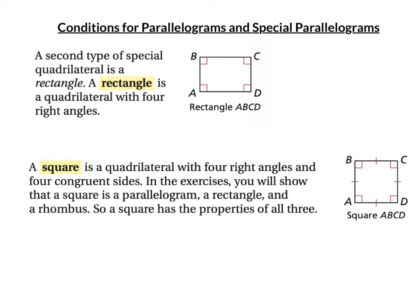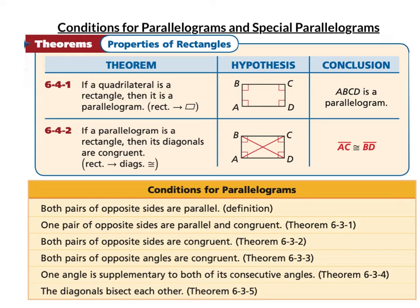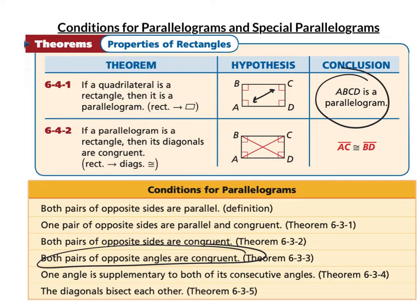The definition of a rectangle is a quadrilateral with four right angles. A square has four right angles and four congruent sides. So a square is a rectangle because it has four right angles, but a rectangle is not necessarily a square because it doesn't have to have four congruent sides. Since a rectangle has four right angles, its opposite angles are congruent, and since the opposite angles are congruent, it's a parallelogram.